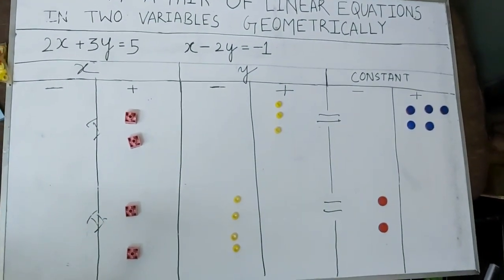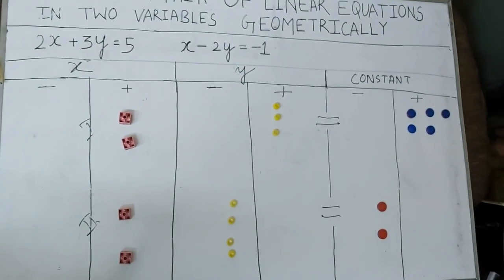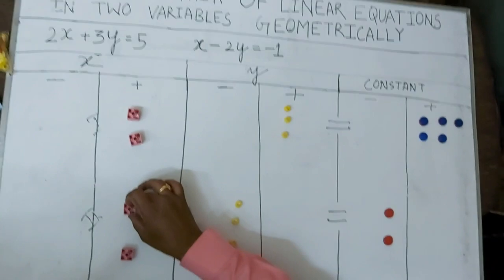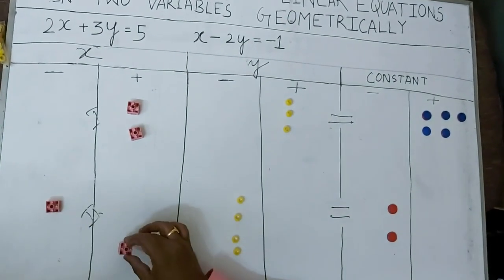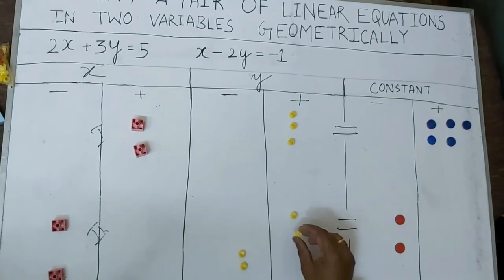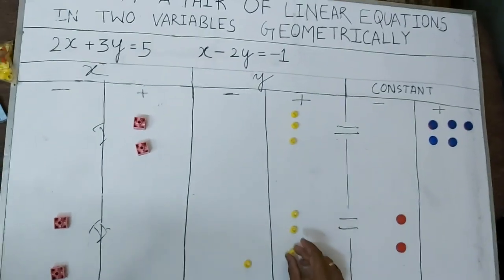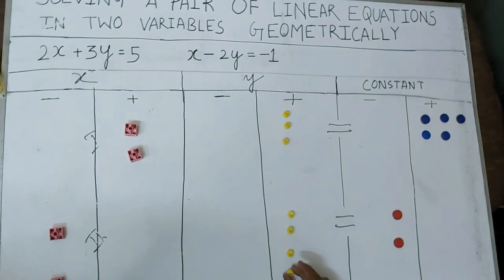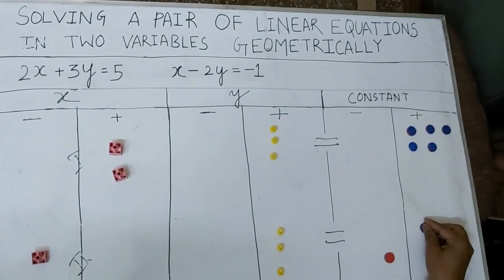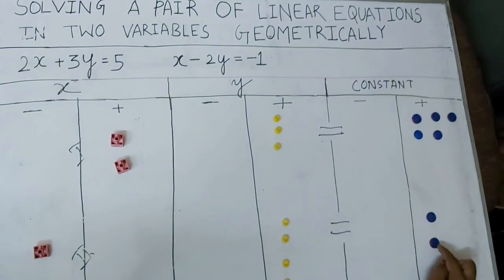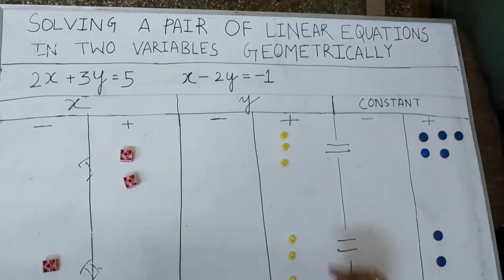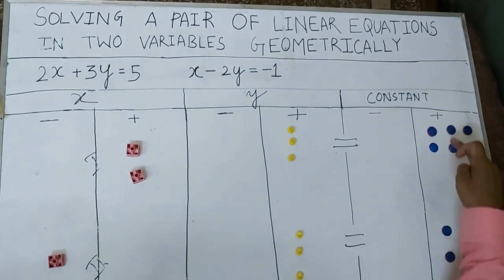Now I subtract. As I told you earlier, the sign changes during subtraction. So plus x becomes minus x, plus x becomes minus x. Each minus y becomes plus y — all four minus y's become plus y's. The negative 1 becomes positive 1 on the other side, and similarly the other negative 1 becomes positive 1. The equation that we have now formed has all positive values.